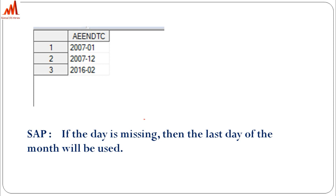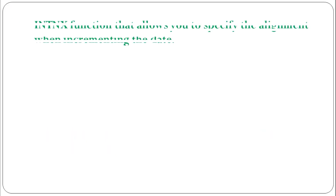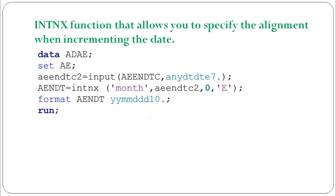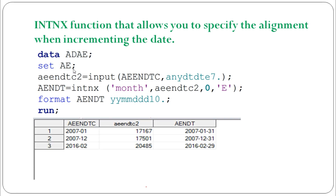I will show you two easy methods. The first one uses the INTNX function. The INTNX function allows you to specify the alignment when incrementing the date. If you see the dataset, we have the AENDTC partial dates. We need to first convert these partial dates to a numeric version by using the ANDTDTE7 dot format, which converts the AENDTC partial date to a numeric date value.